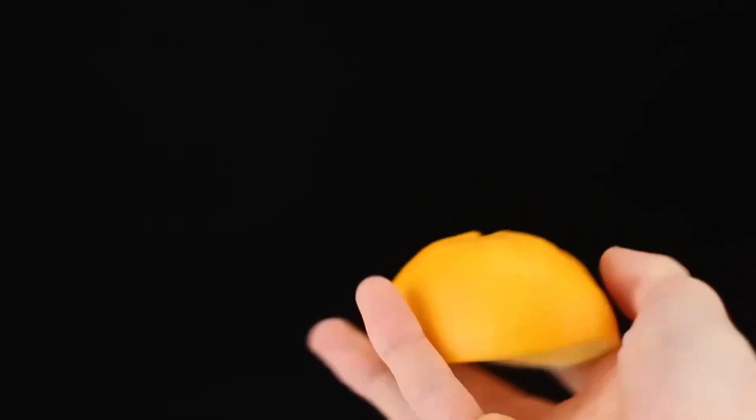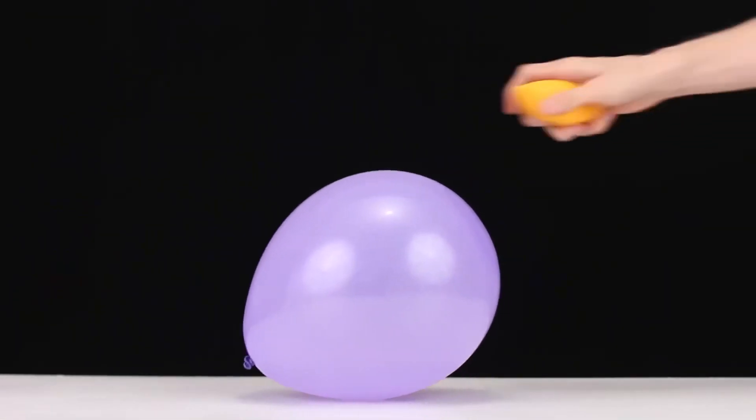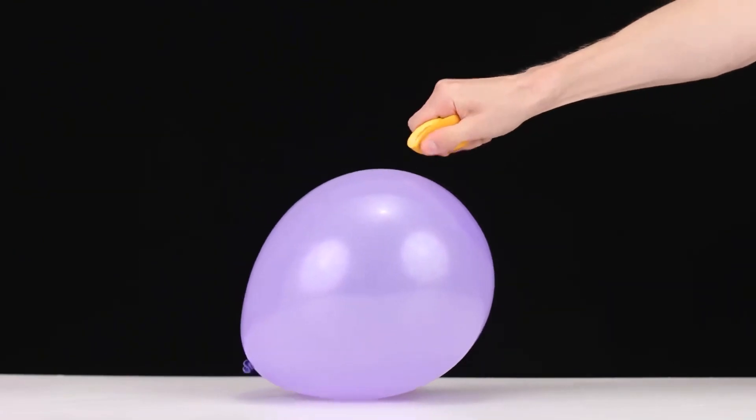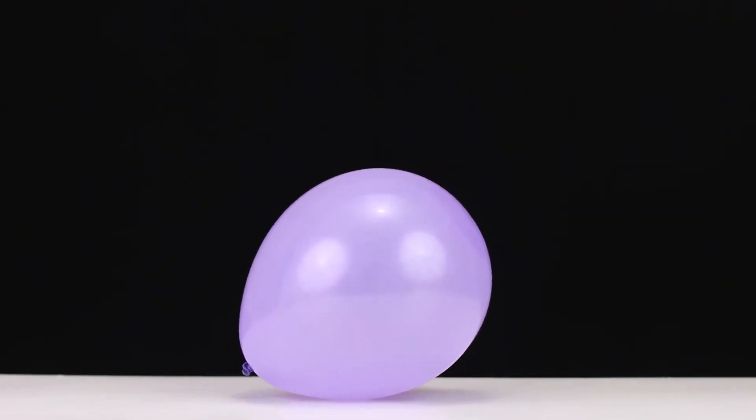Now, we need a fresh orange peel, from which citrus oils can still be squeezed out. Let's sprinkle these oils on a well-inflated balloon and see what happens. The balloon burst! Wow!